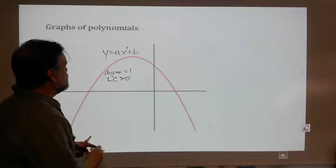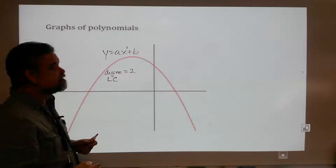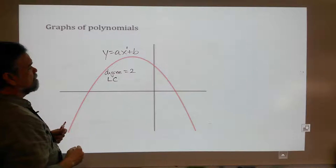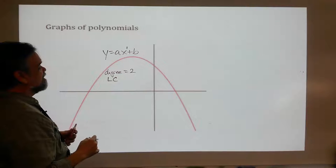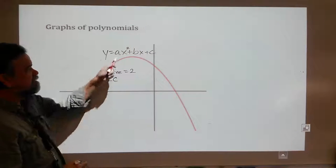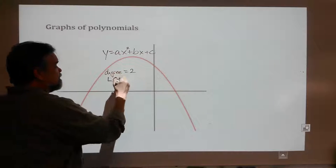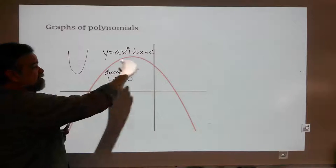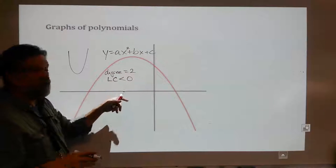What about this one? The degree appears to be 2, because this appears to be a parabola. That would mean this is ax squared plus bx plus c — a second-degree polynomial. And for this one, the leading coefficient a would be less than 0. Why? Because when a is greater than 0 it looks like this, and when a is less than 0 it looks like this. I think the degree is 2 — I'm not positive, but I'm pretty sure.